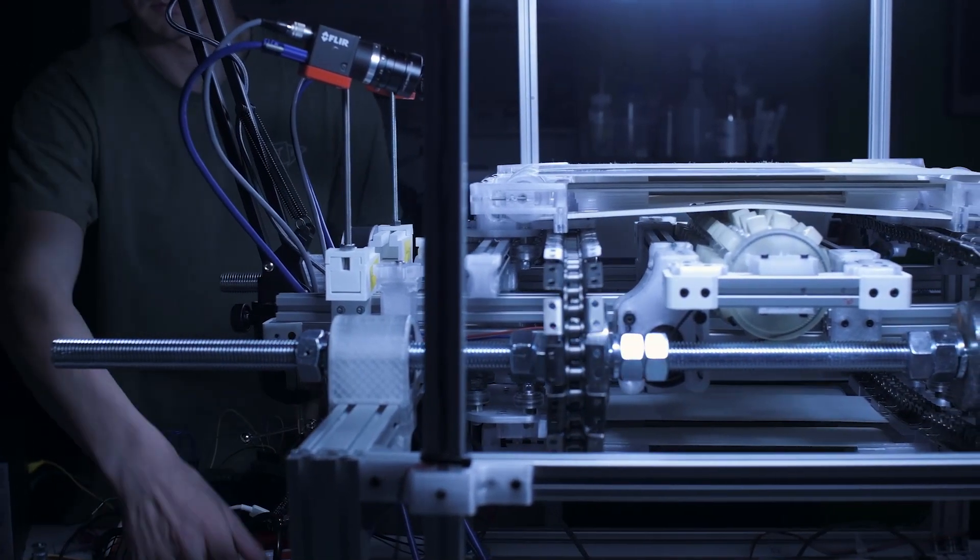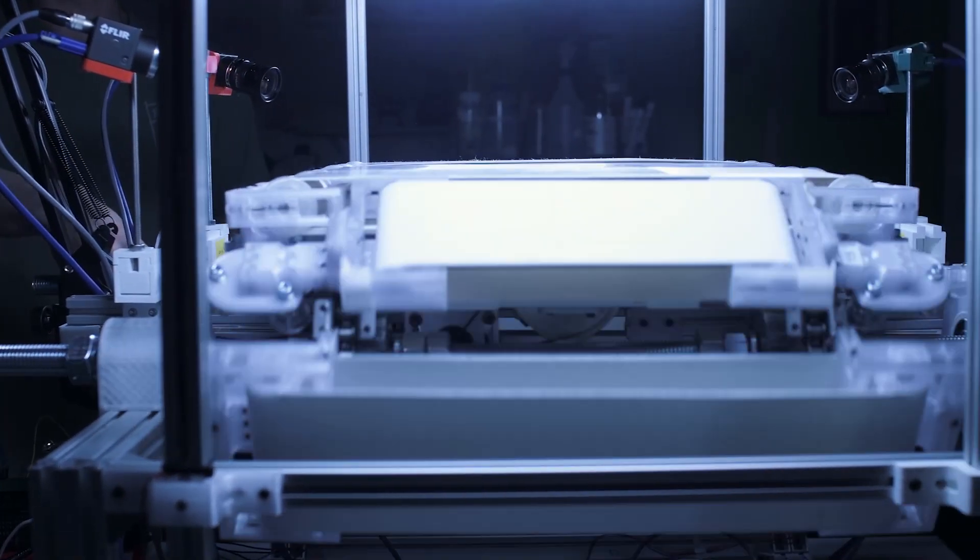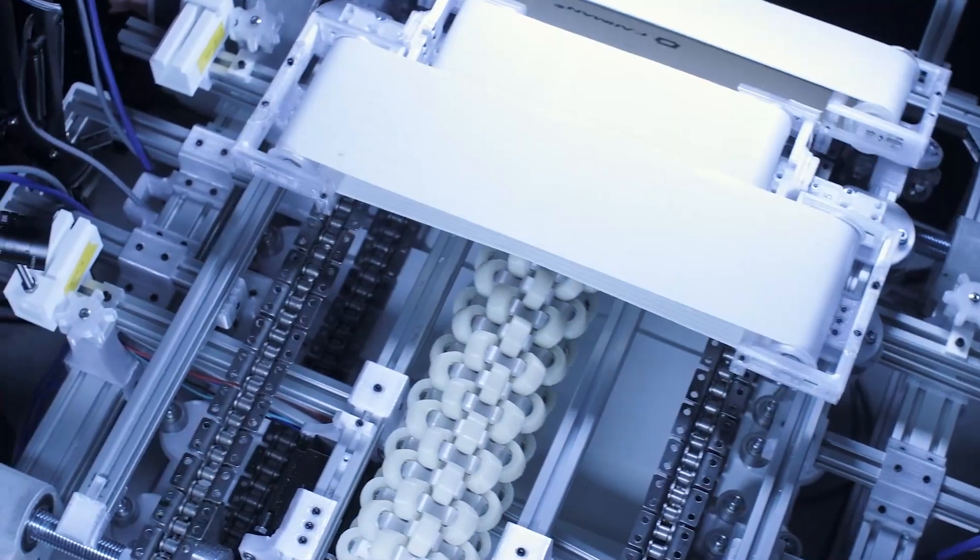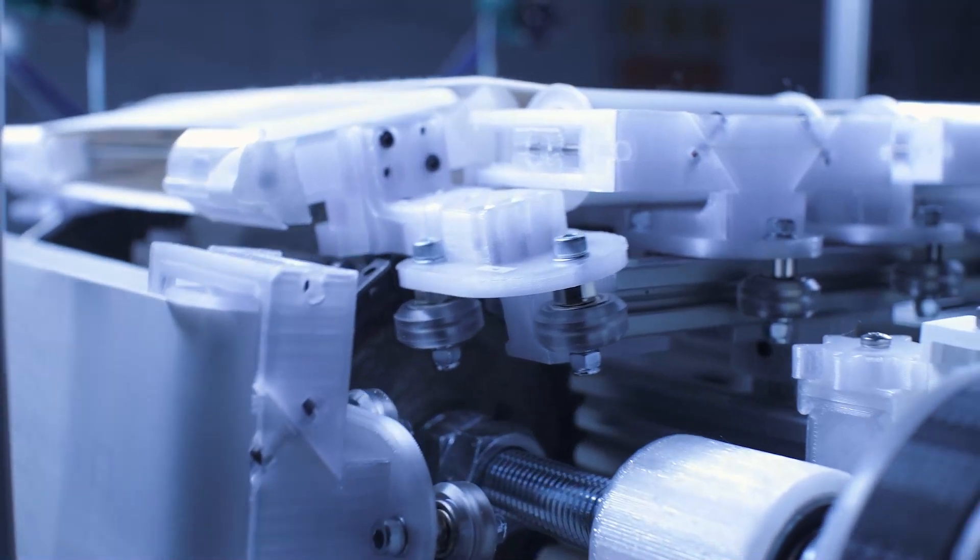The treadmill consists of 16 segments of alternating size that are mounted on two chains. As the segments move around the treadmill, they slide in and out of each other and form a flat walking surface on the top, tracked by a rail system on each side.